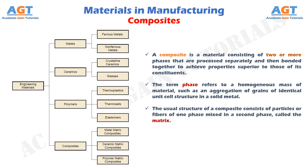Properties of a composite depend on its components, the physical shapes of the components, and the way they are combined to form the final material. Some composites combine high strength with light weight and are suited to applications such as aircraft components, car bodies, boat hulls, tennis rackets, and fishing rods. Other composites are strong, hard, and capable of maintaining these properties at elevated temperatures — for example, cemented carbide cutting tools.